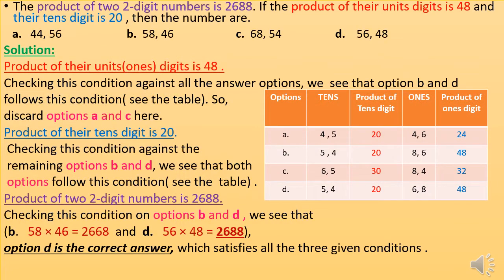The product of two two-digit numbers is 2688. If the product of their units digits is 48 and the product of their tens digits is 20, find the numbers. There are three conditions in this question: the product of the two two-digit numbers is 2688, the product of their units digits is 48, and the product of their tens digits is 20.